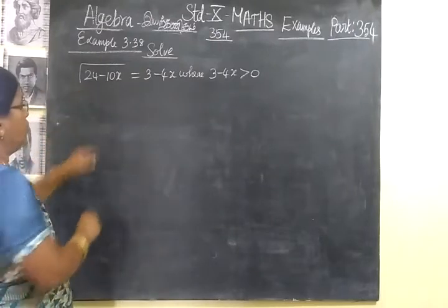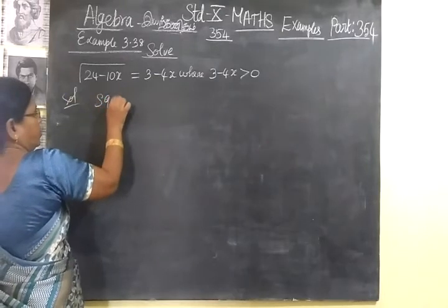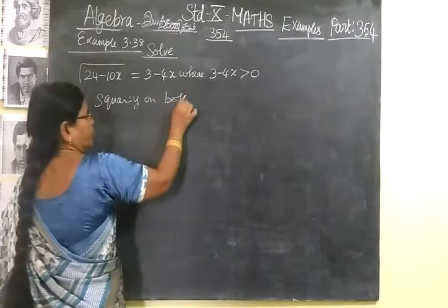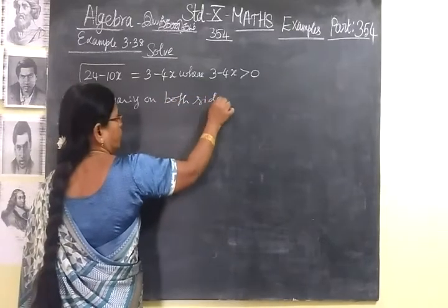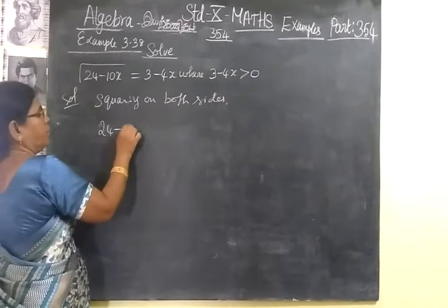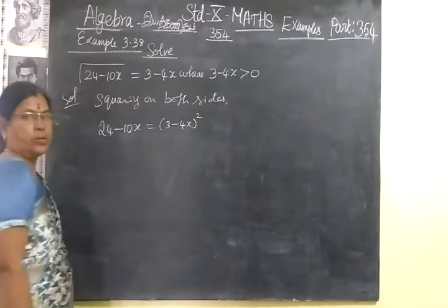Now we've got to remove the root by squaring on both sides. So squaring on both sides, you can get 24-10x equal to (3-4x)².